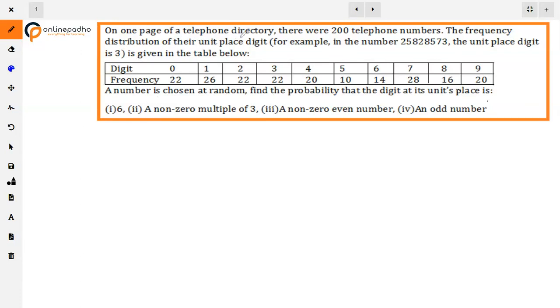The question is, on one page of a telephone directory, there are 200 telephone numbers. The frequency distribution of their unit place digit is given: 0 has 22, meaning if the unit place digit is 0, then its frequency is 22. Similarly, digits 1, 2, 3, 4 up to 9 are given.